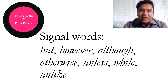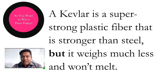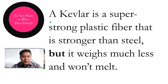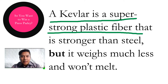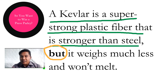Let's study the given examples. Example number one: a Kevlar is a super strong plastic fiber that is stronger than steel, but it weighs much less and won't melt. You notice that the definition has two parts, and it is separated by the conjunction 'but,' which signals a contrast.